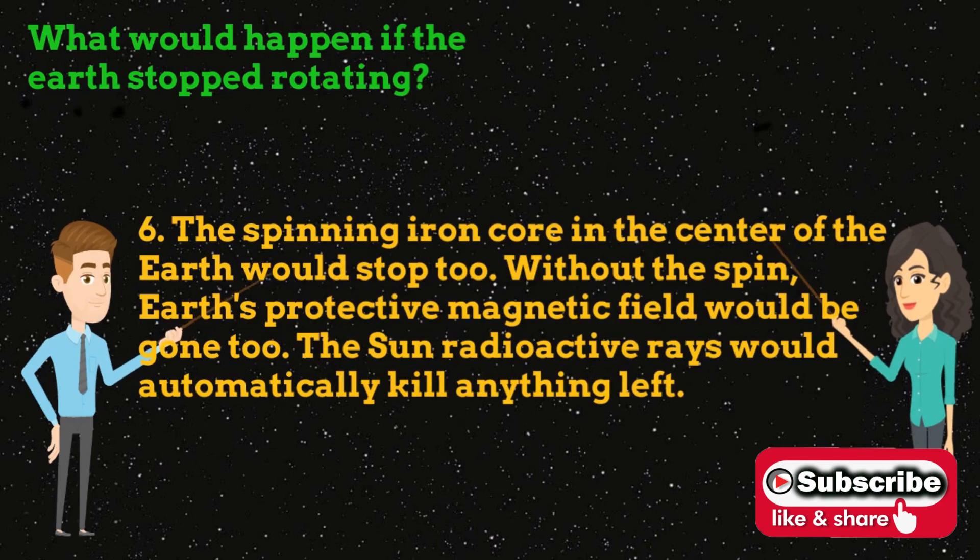Number 6: The spinning iron core in the center of the Earth would stop too. Without the spin, Earth's protective magnetic field would be gone too. The sun's radioactive rays would automatically kill anything left.